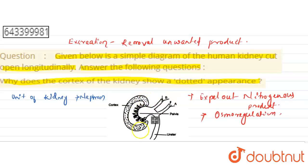As we can see that a dotted appearance is there in the cortex. Cortex is the outer part of the kidney. This is because of the presence of nephrons.